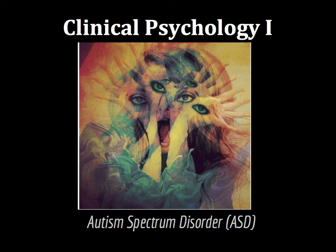In 1910, Swiss psychiatrist Eugène Bleuler coined the Latin term autismus to describe 'the withdrawal of a patient to his fantasies.' With this term, Bleuler was hoping to define one of the symptoms of schizophrenia.